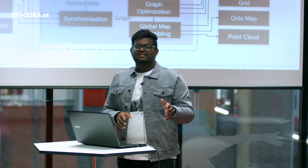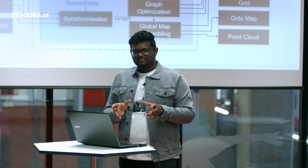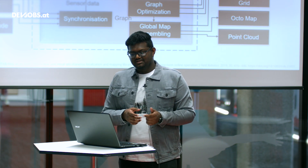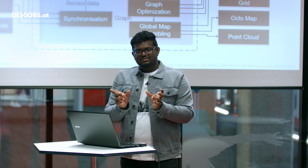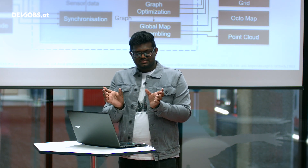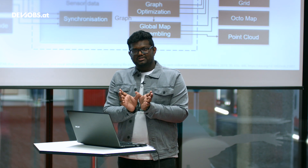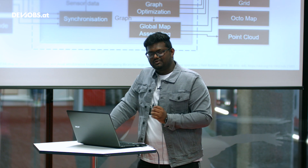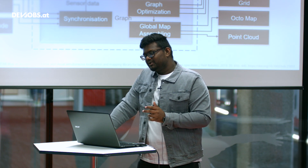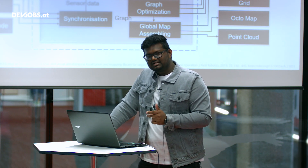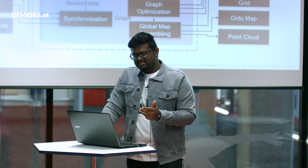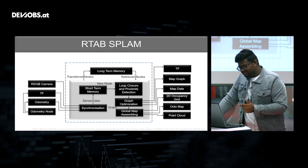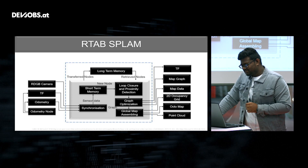From short-term memory the data is sent to loop closure. Loop closure is the same concept I explained earlier with the city exploration example — two images share common features, the overlapping features are fused together to produce a map of the environment, forming the global map. Our outputs of interest are the two-dimensional occupancy grid map and the octomap, which is the three-dimensional map. For our demo today, we are focused on the three-dimensional map.